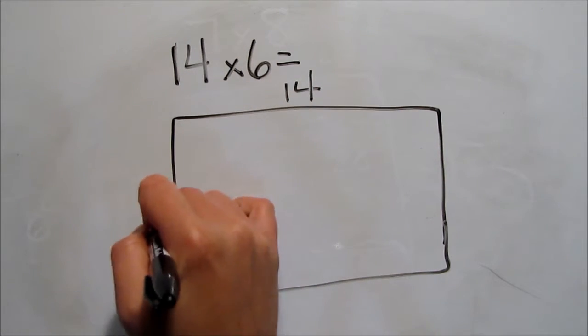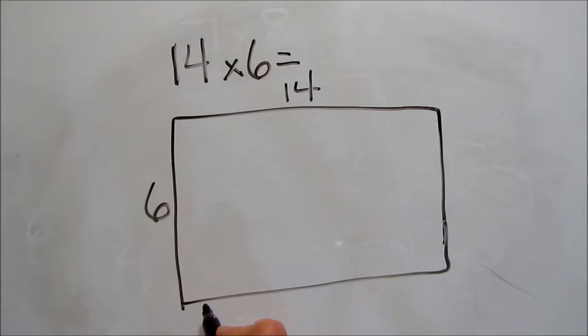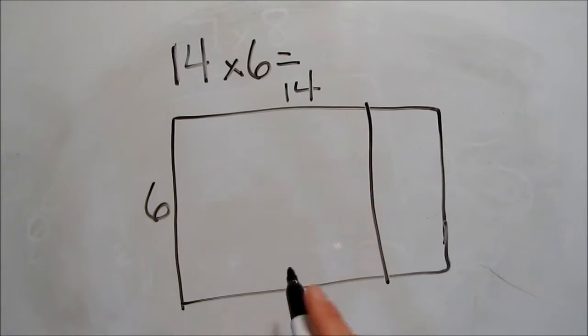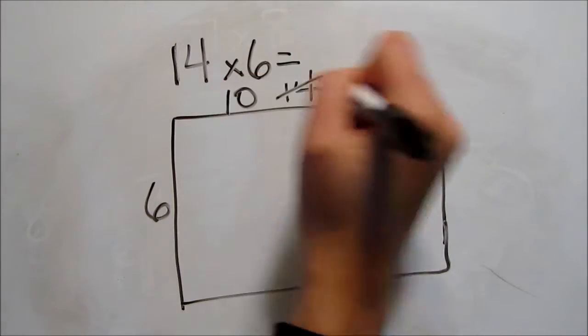So, first we'll draw our open array and label it. Then we decide what number we're breaking apart. Because I don't have any times 14 facts memorized, I'm going to break that apart. 14 is 10 and 4.